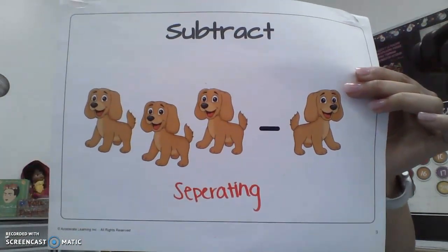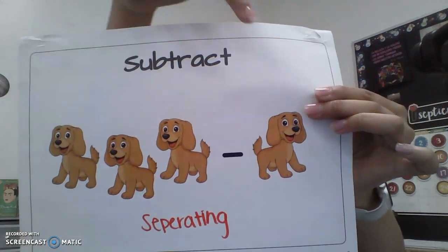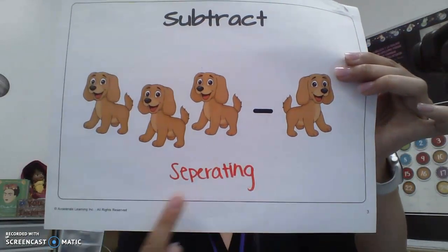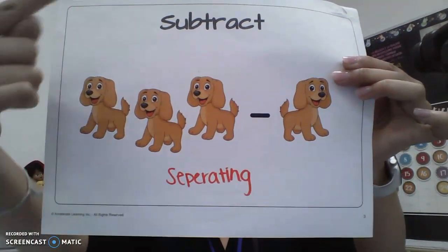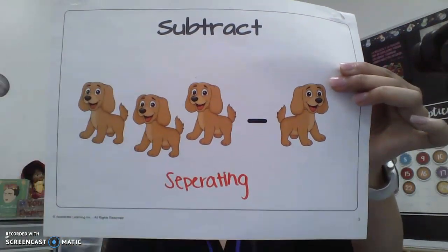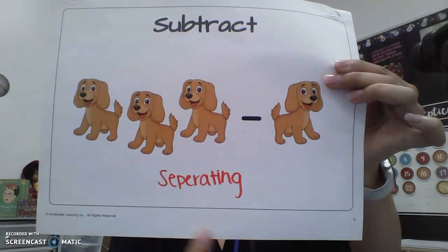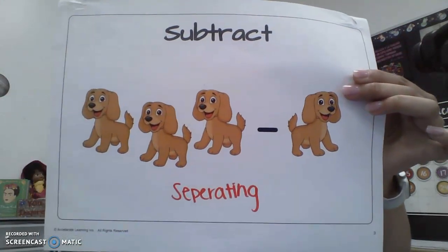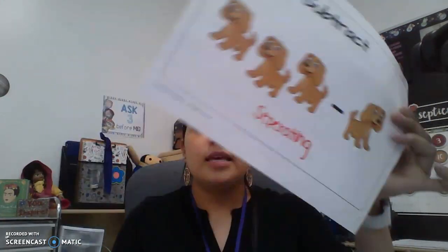The second vocabulary word is subtract. When we have three dogs and we take away one dog, that is subtracting, or separating — because subtracting means separating.